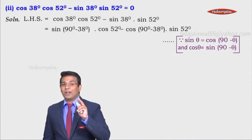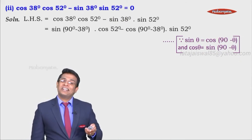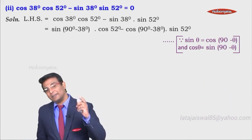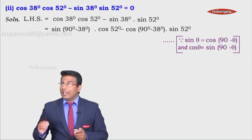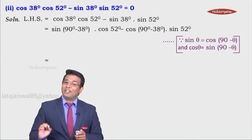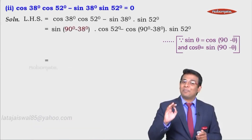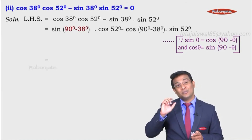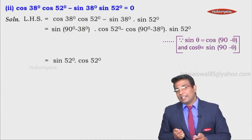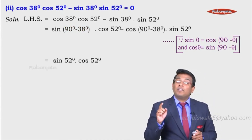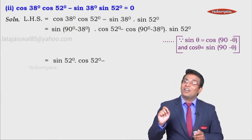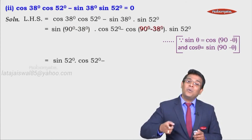We applied two identities: sin theta equals cos(90 minus theta), and cos theta equals sin(90 minus theta). Now solving further: sin of (90 minus 38) — what is 90 minus 38? It is 52 degrees. So we get sin of 52 degrees for the first term, into cos of 52, which remains as it is. Minus cos of (90 minus 38), which is cos of 52 degrees.